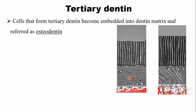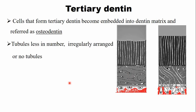The dentine matrix gives a bone-like appearance in osteodentine. In tertiary dentine, the tubules are fewer in number and irregularly arranged because tertiary dentine is deposited at a faster rate. Sometimes there are no tubules at all. This depends on the rate, severity, intensity, and duration of the stimulus.